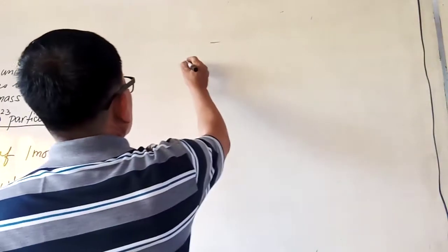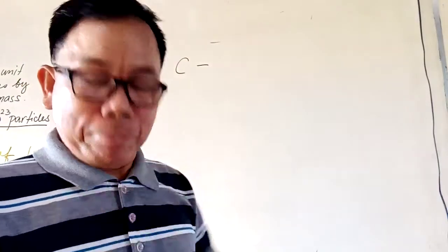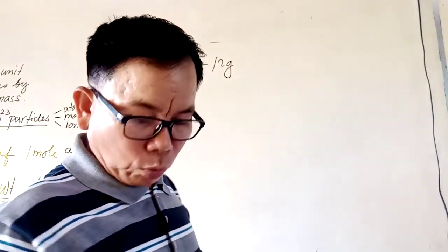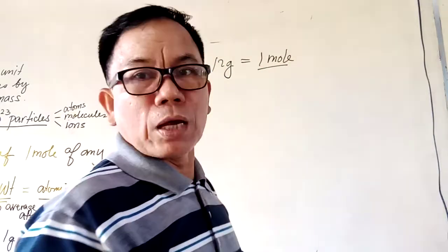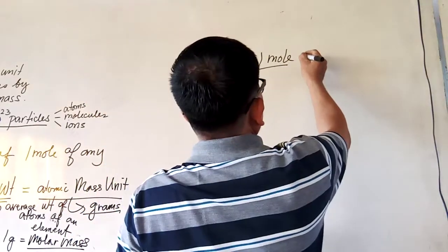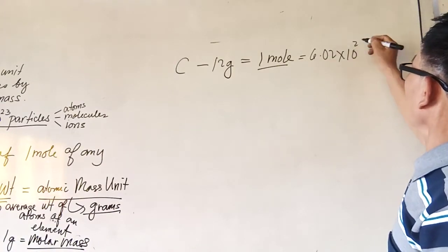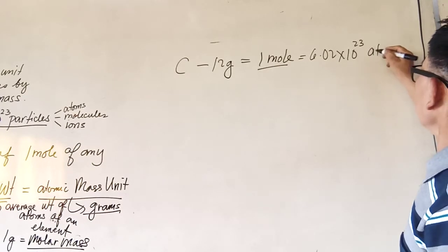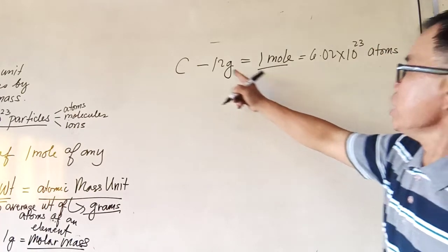Let us take carbon as an example. The atomic weight of carbon is 12 grams. In that 12 grams, that is equivalent to one mole of that substance. And since that is one mole, it indicates that there are 6.02 times 10 to the 23rd atoms. There are 6.02 times 10 to the 23rd atoms in 12 grams of carbon.